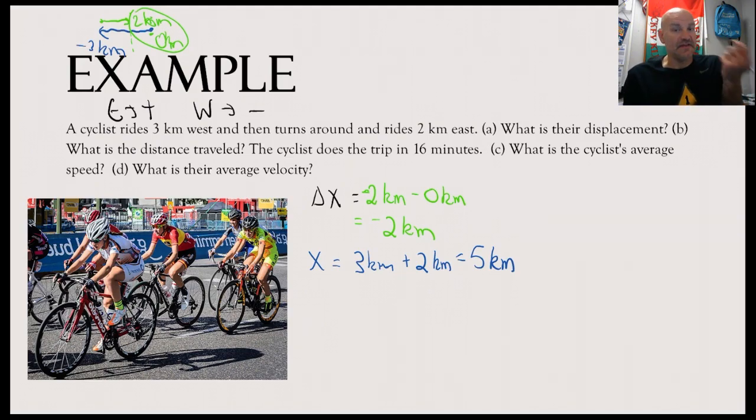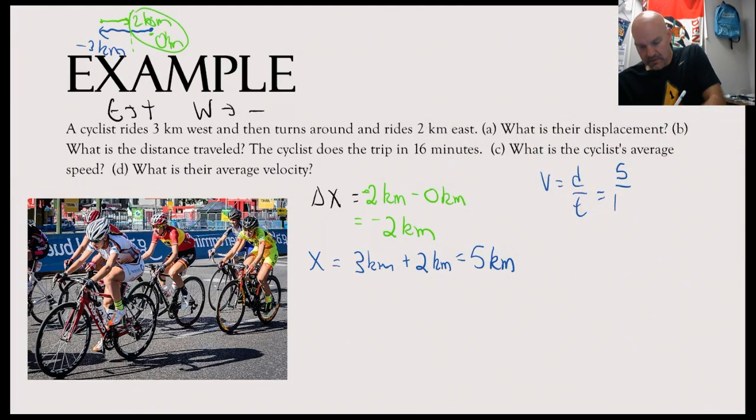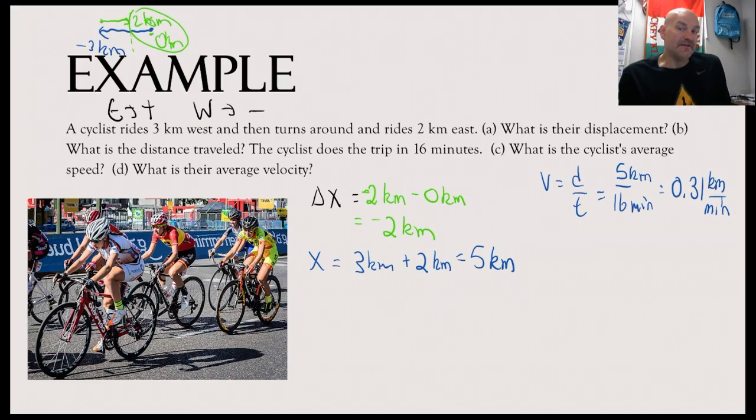Now, what if they do this in 16 minutes? What is the average speed? What is the average velocity? So speed is distance over time. And we'll just leave it in a unit of kilometers per minute, which is fine. So I wrote a two. It should be a one. So we did five kilometers in 16 minutes. So I've got my handy-dandy calculator. So it's 0.31 kilometers per minute. If you want to know what that is in kilometers per hour, you can convert minutes to hours by simply multiplying 60 minutes.